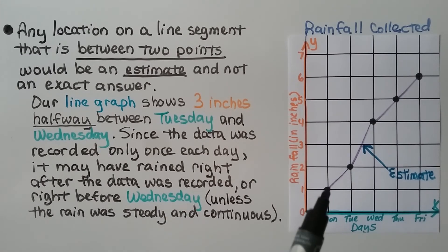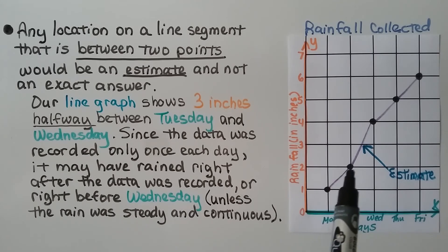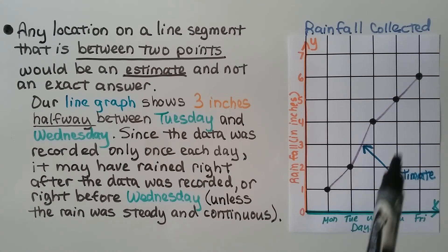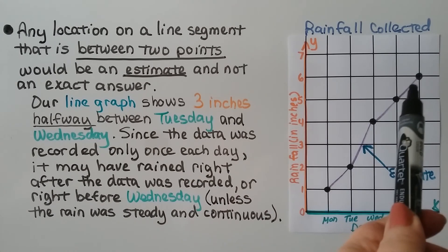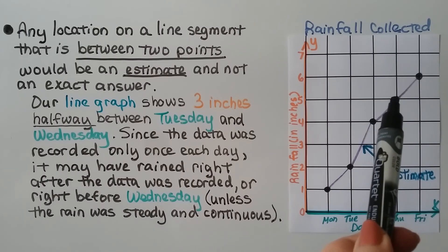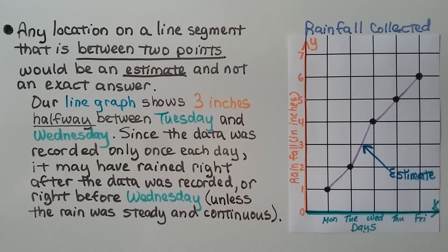And even between Monday and Tuesday, this place right here on the line segment, that would be an estimate. And in between here would be an estimate, and in between here would be an estimate, because it's being recorded only where the points are. We don't know what happened in the middle of the day.